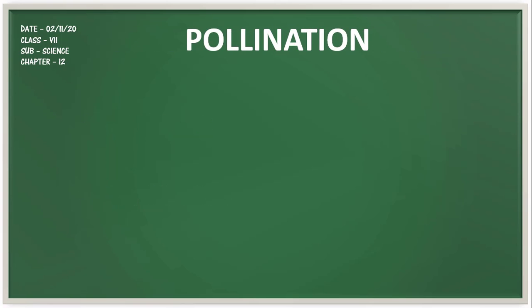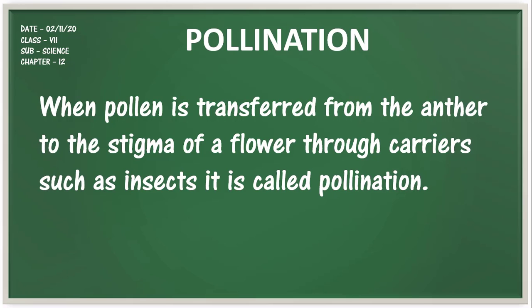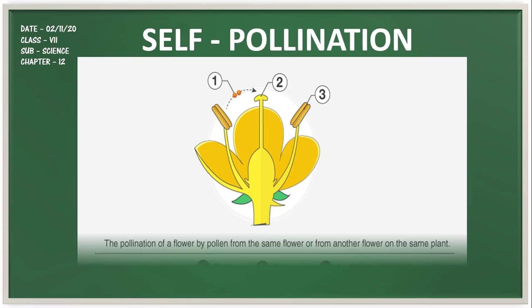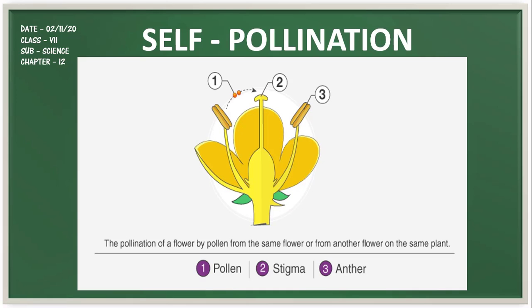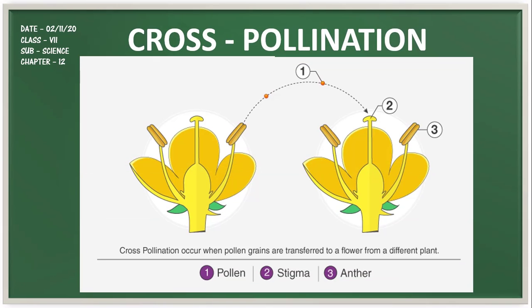Now we will study pollination. When pollen is transferred from the anther to the stigma of a flower through carriers such as wind, water, or insects, this process is called pollination. It is called self-pollination if pollen lands on the stigma of the same flower or another flower of the same plant. But if pollen grains land on the stigma of a flower of a different plant of the same kind, it is called cross-pollination.